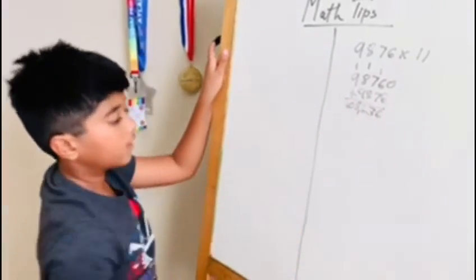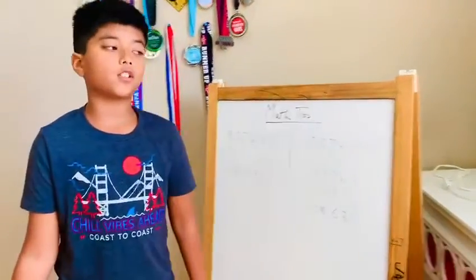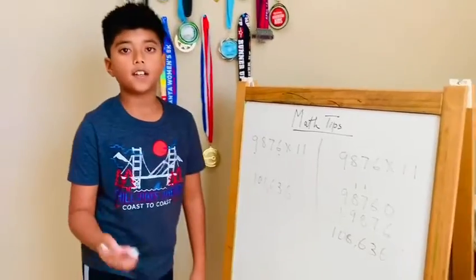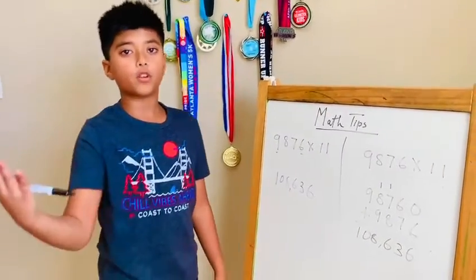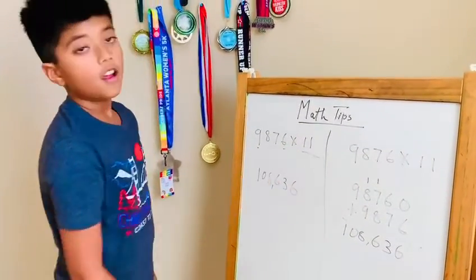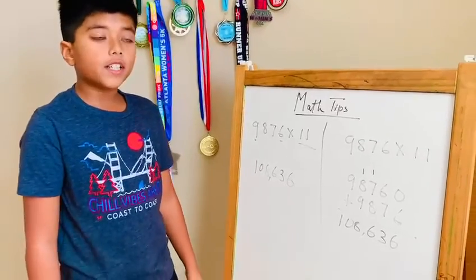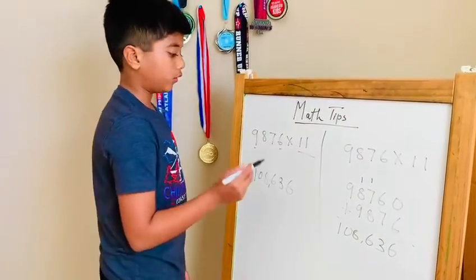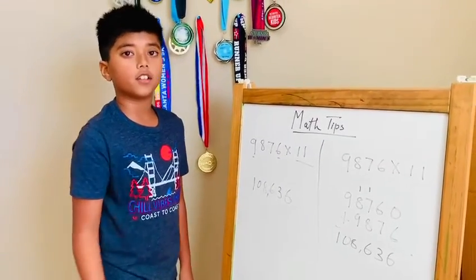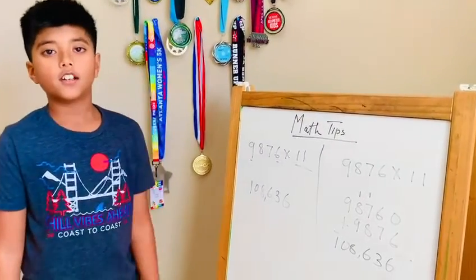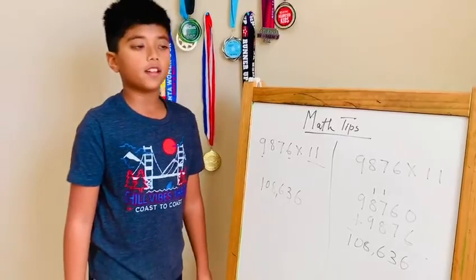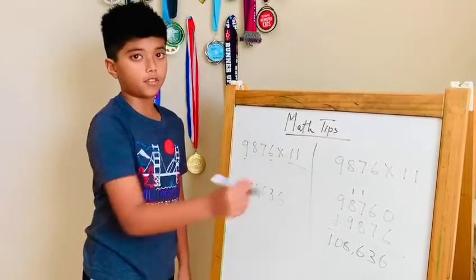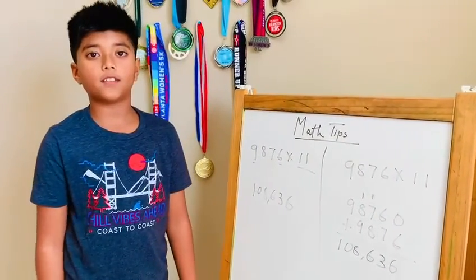Now that we finished learning how to multiply a two-digit, three-digit, and four-digit number by 11, you can feel free to multiply any digit number. You can do a seven-digit, eight-digit, nine-digit, maybe even a ten-digit. You can feel free to do that with the two methods. I hope you like this video, thanks for watching.